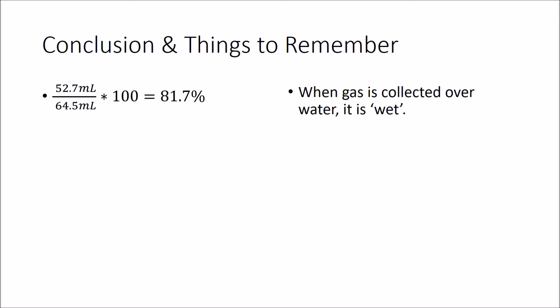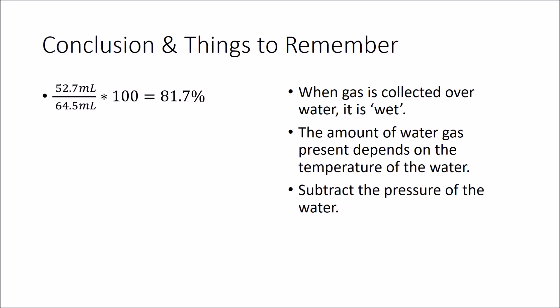Some things to remember. When gas is collected over water, it's wet. So we need to subtract out the amount of water that's there. And the amount of water that's there depends on the temperature of the water. So we can subtract it. And this allows us to determine the volume of hydrogen gas.